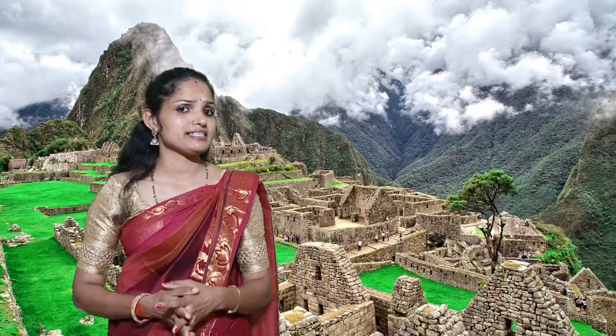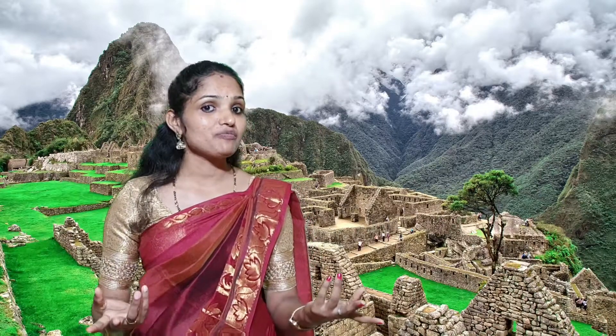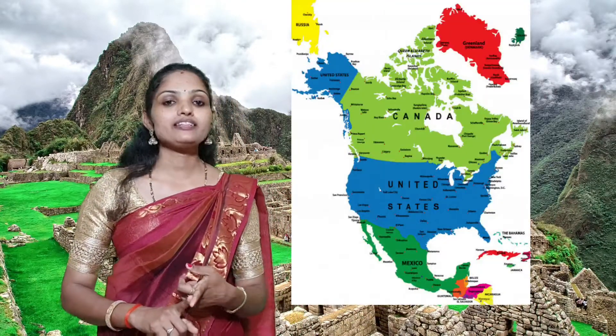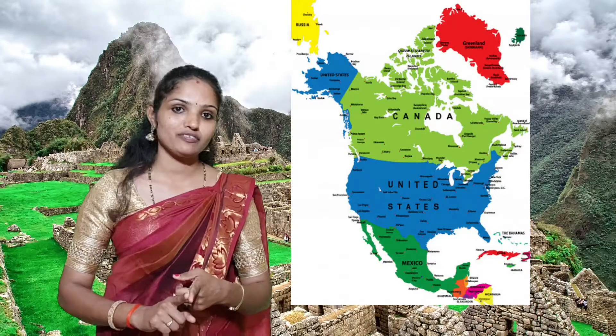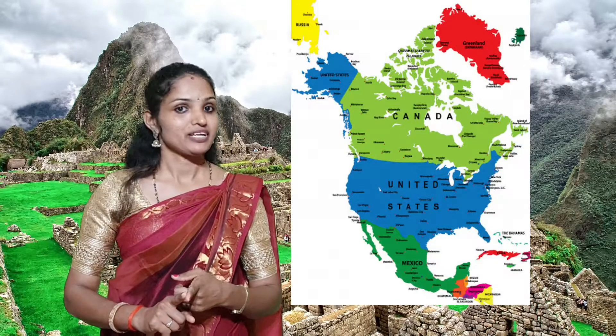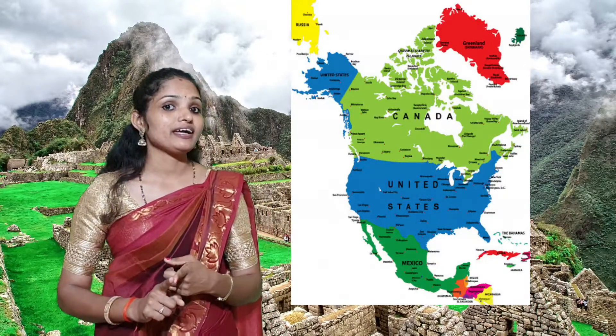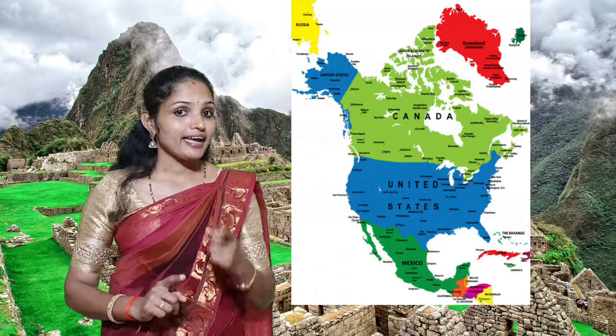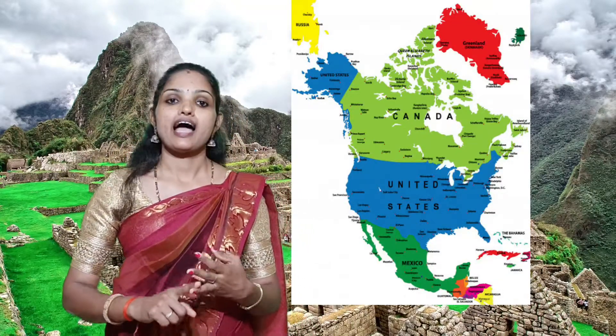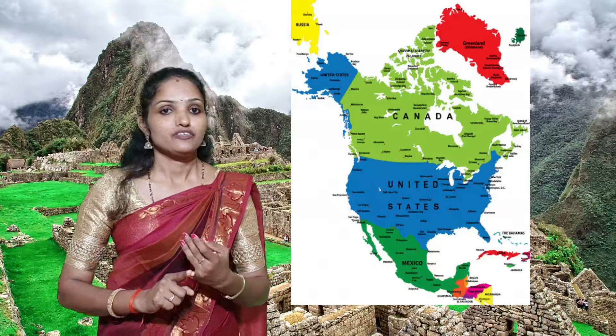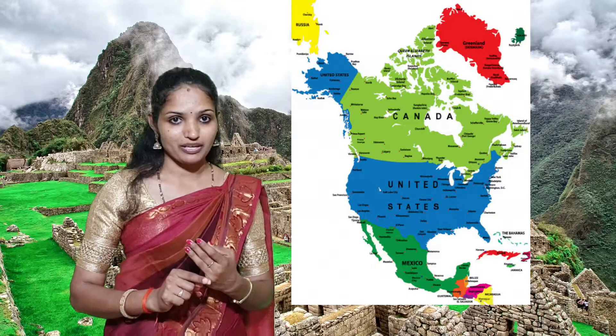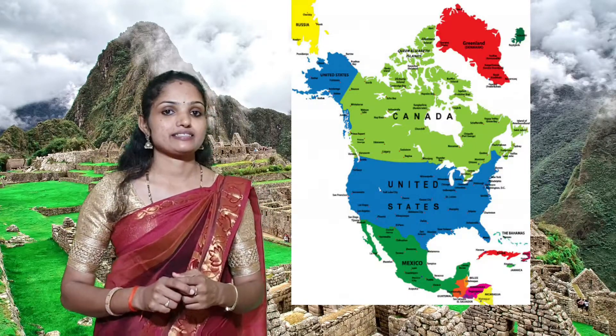Students, in the geography lesson, we have already finished the first lesson. Which chapter is it? Yes, North America - land of friars. We have learned the extent, location, physical settings and physical features of North America.